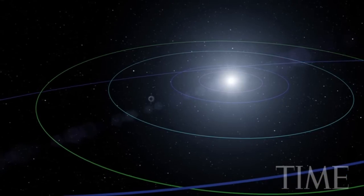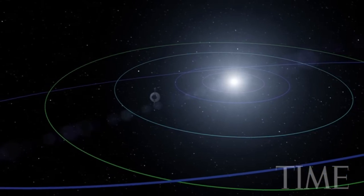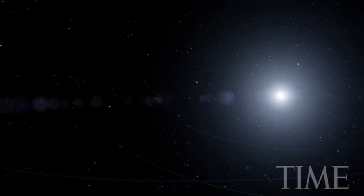Voyager 1 bounced up out of the plane of the solar system after passing Saturn and thus made only a two-planet tour.